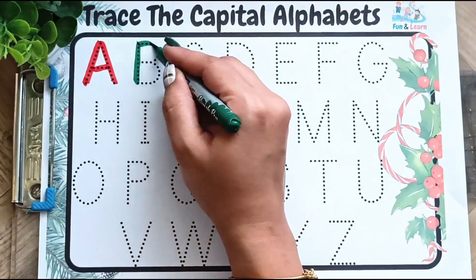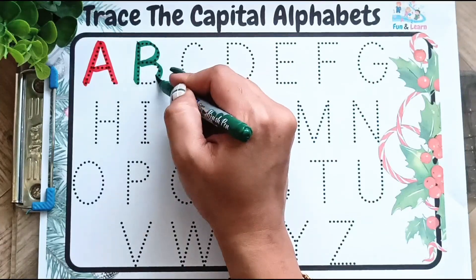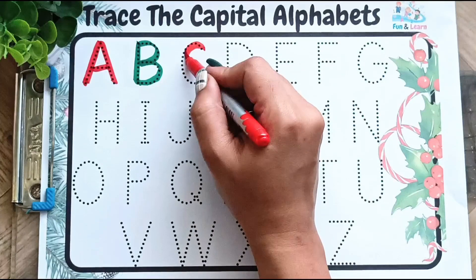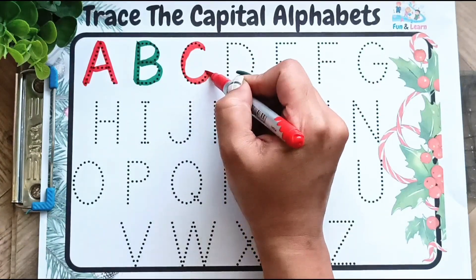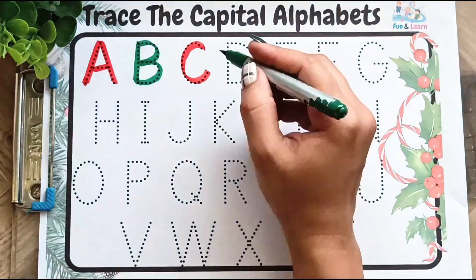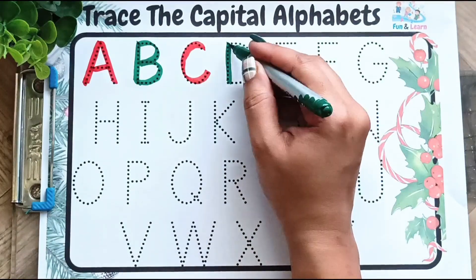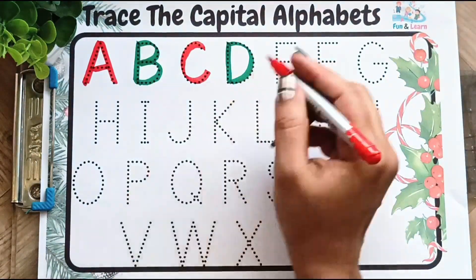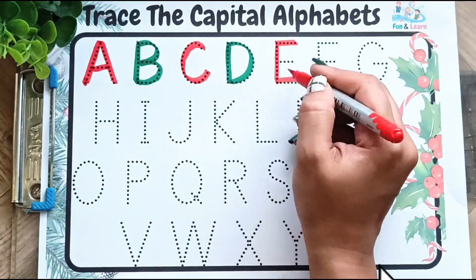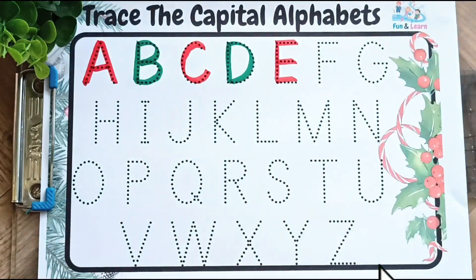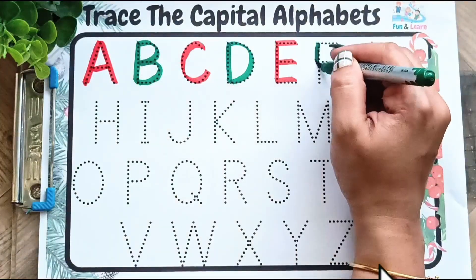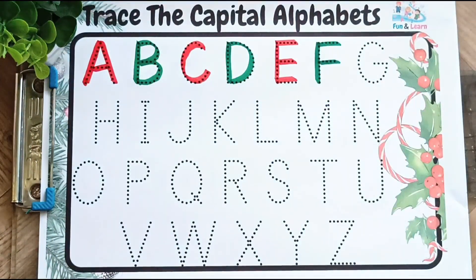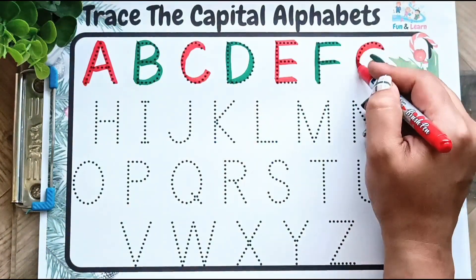B, B for ball. C, C for cat. D, D for dog. E, E for elephant. F, F for fish. G, G for goat.